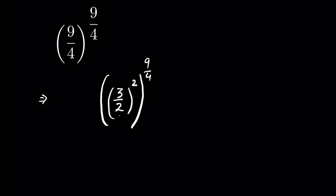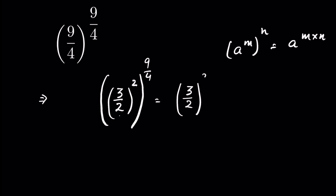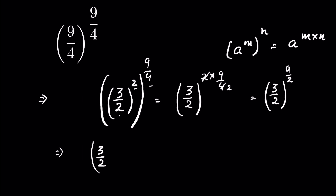Now we know that a to the power m, whole to the power n, is equal to a to the power m into n. So this we can write as (3 upon 2) whole to the power 2 multiplied by 9 upon 4, where 2 is m and 9/4 is n. You can reduce it, and this becomes (3 upon 2) whole to the power 9 upon 2.